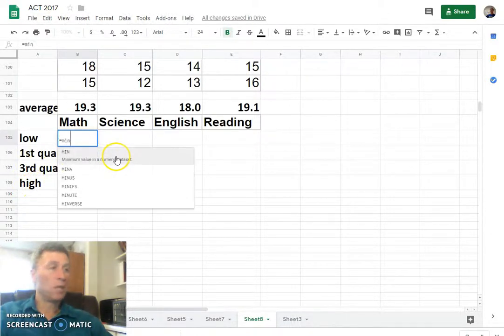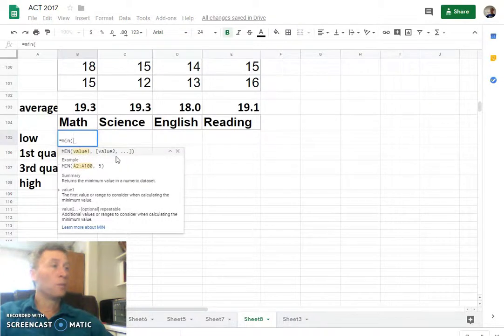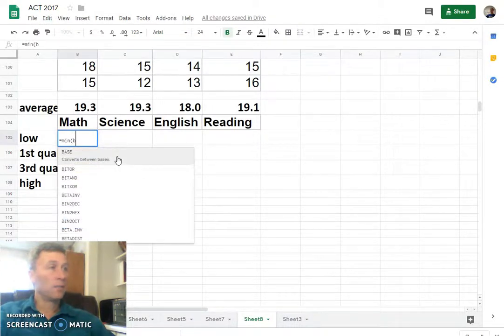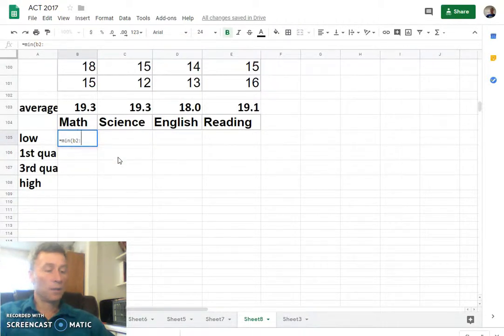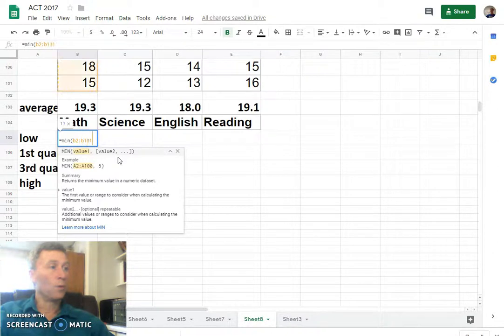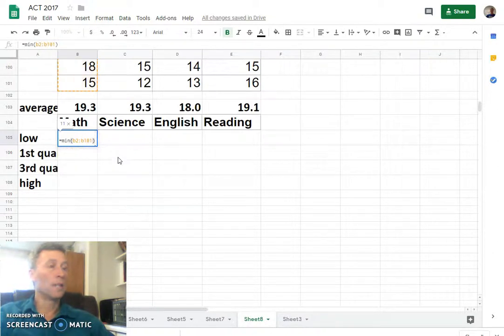So we'll say equals min. The minimum of the column for math, that's in column B, starts at row two, goes down to row 101, or you can just select that.